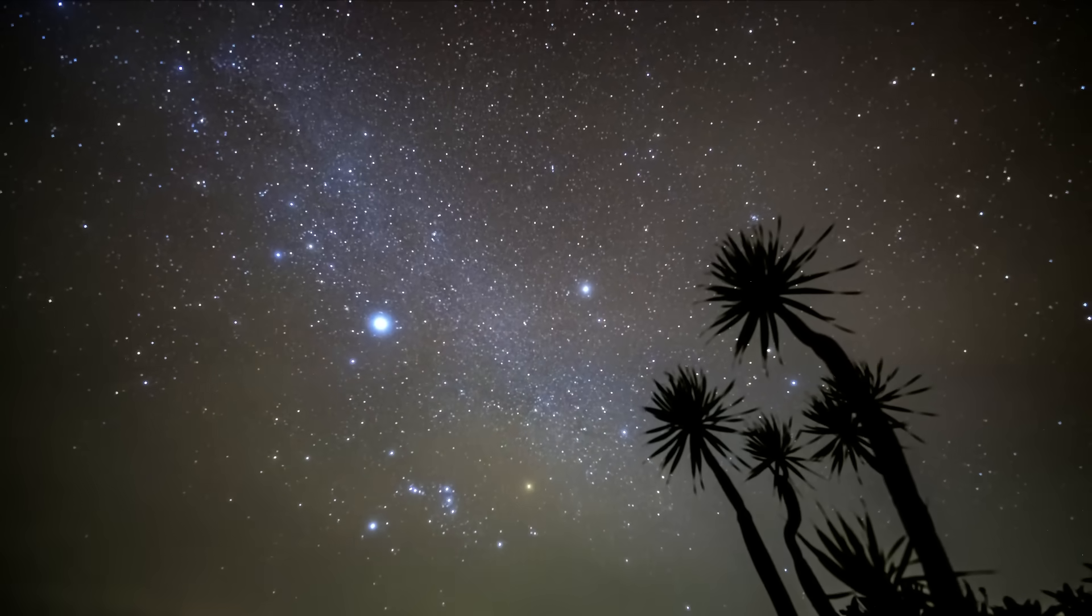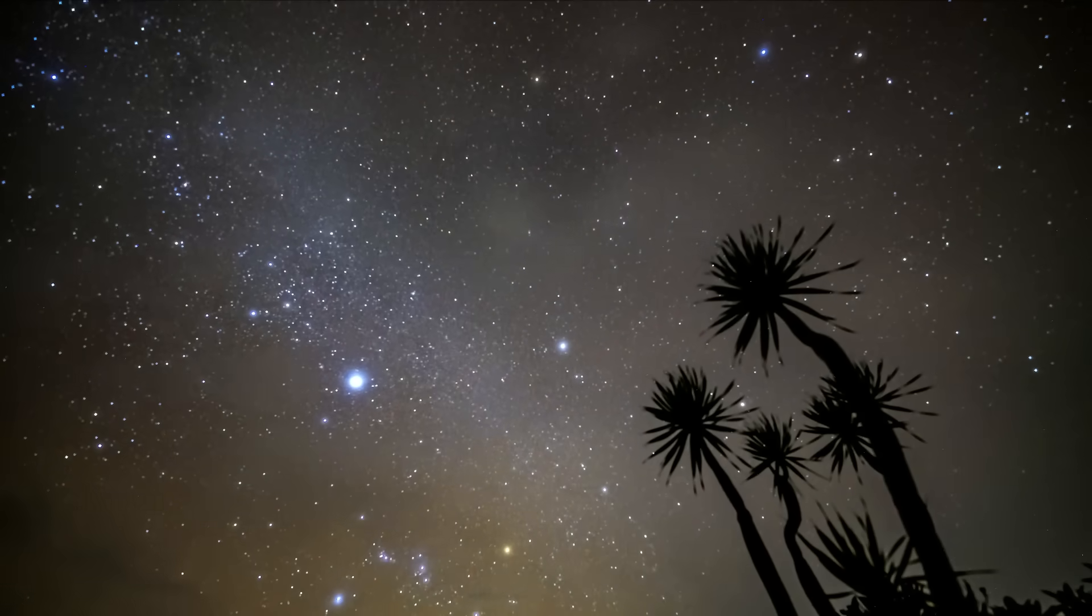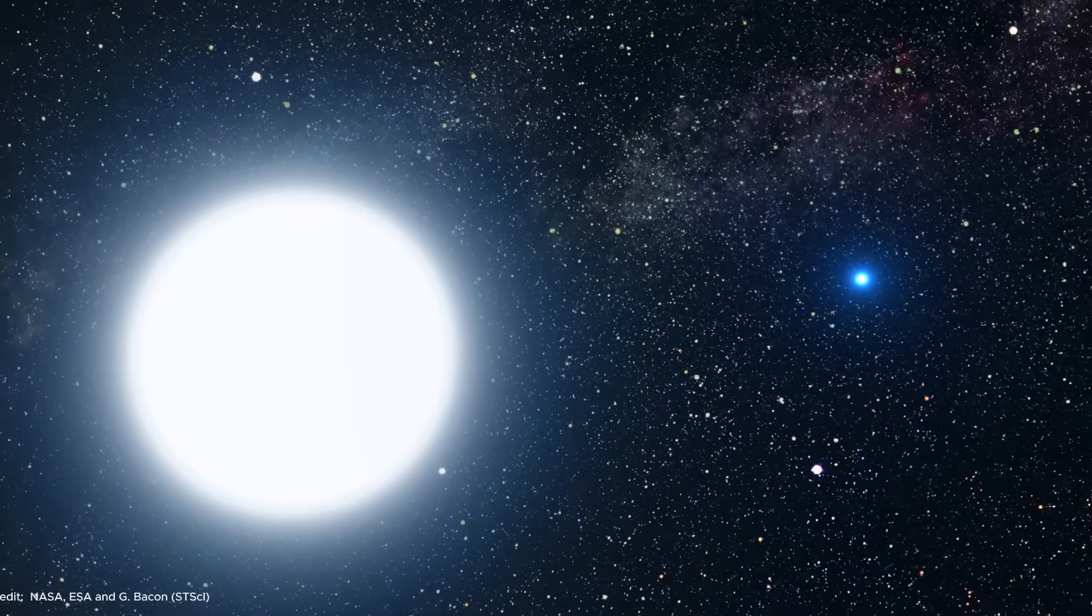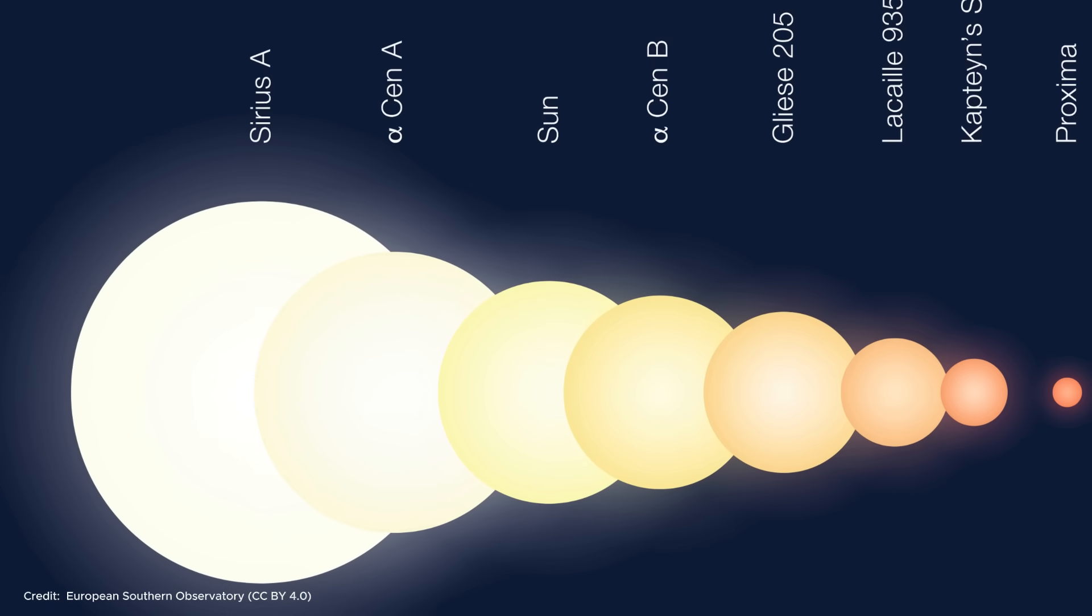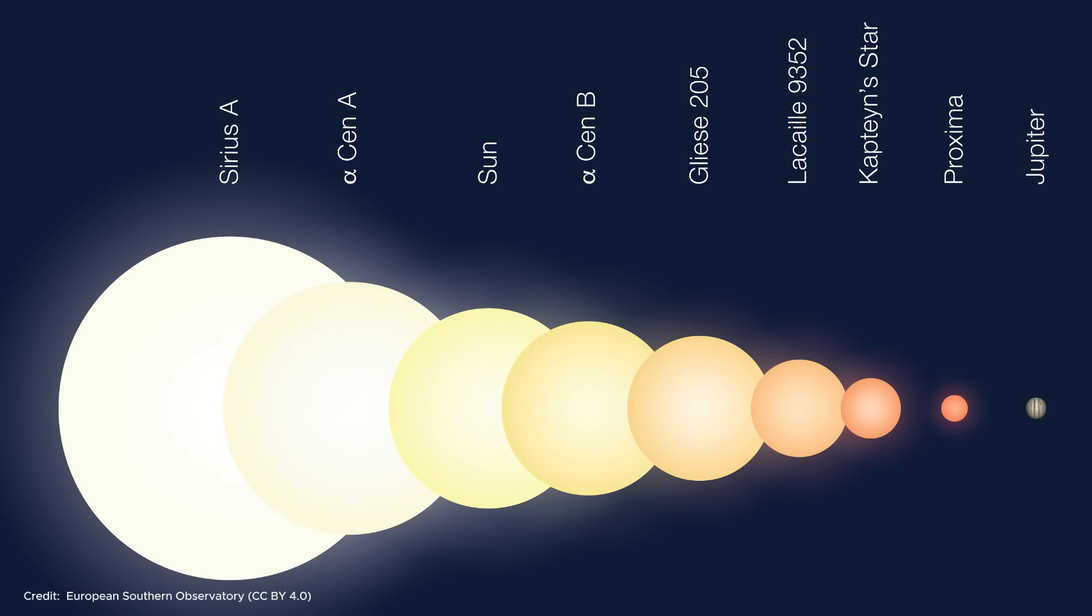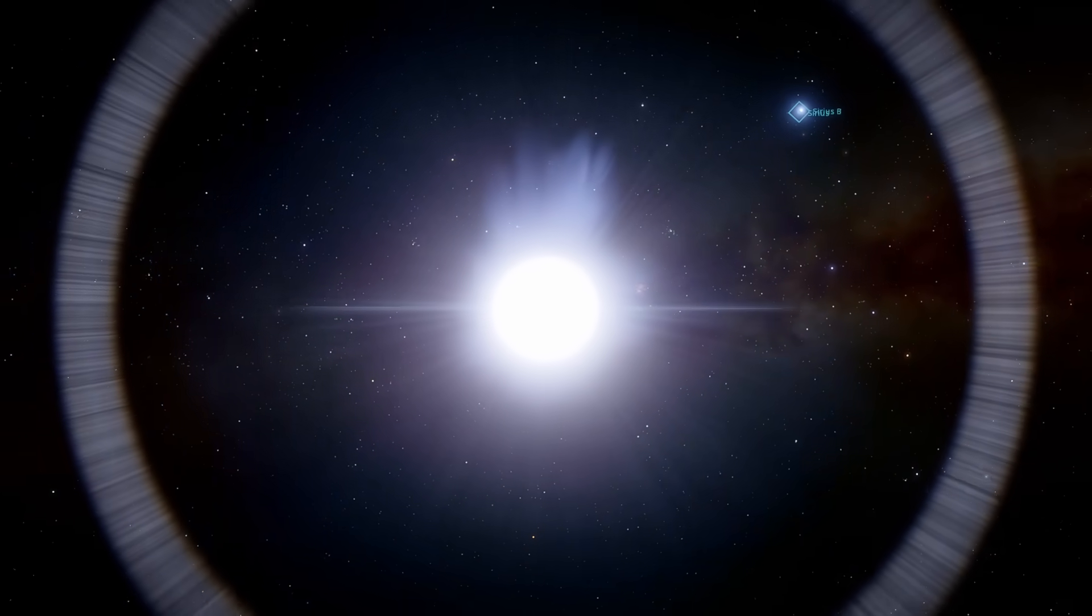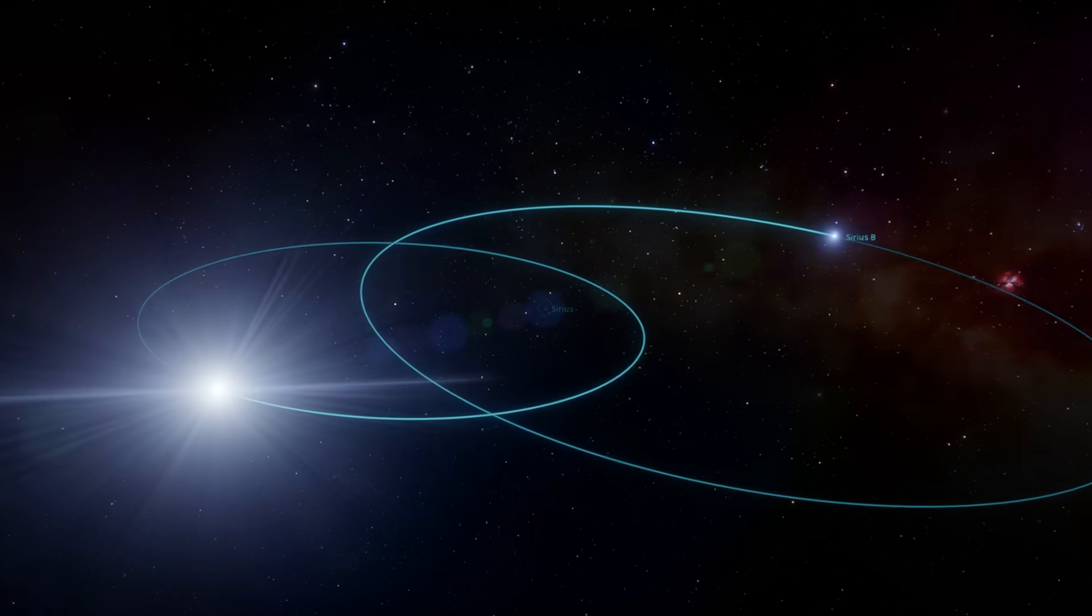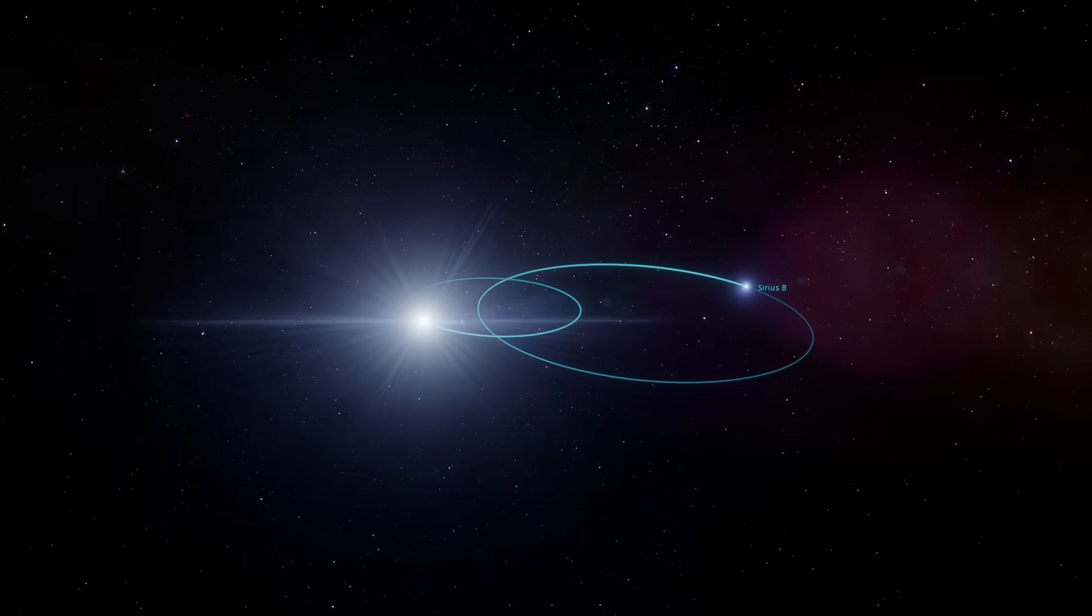Sirius is undoubtedly the star that has fascinated mankind the most in the night sky throughout history. Thanks to its brightness, many civilizations have considered this star sacred and used it as a measure when determining their calendars. Sirius is 8.6 light years away from us and is actually a binary star system. The larger and brighter of the stars, Sirius A, has twice the mass of the sun and is 25 times brighter. Sirius A is a white main-sequence star, young and short-lived. Sirius A's companion star, Sirius B, is a white dwarf star left over from a dying star. Although Sirius can be recognized with the naked eye, this binary star system can only be distinguished with a good telescope.